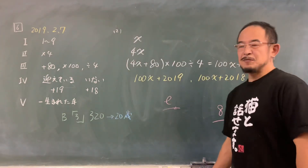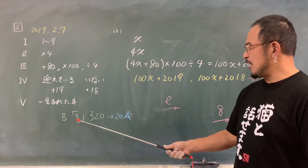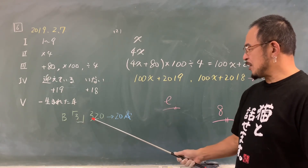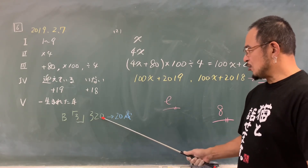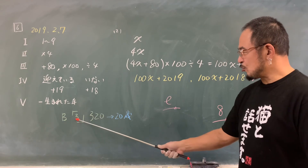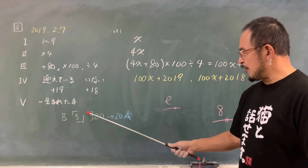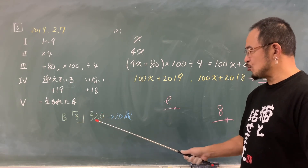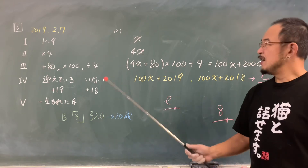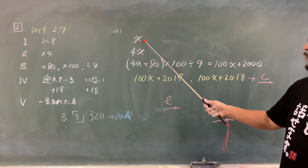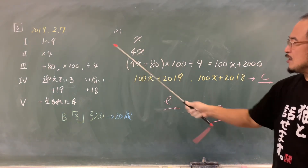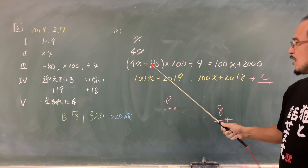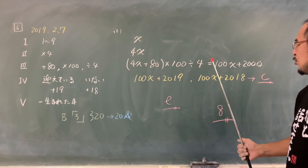2です。まず、Bさんは3を選んで計算結果が320で20歳と。要するに、この3がここに現れて、年齢がここに現れているということが想像つきますね。Xを選ぶと、4倍して4X、80を足して100をかけて4で割ると100X+2000。誕生日を迎えていれば19を足して100X+2019、迎えていなければ18を足して100X+2018。